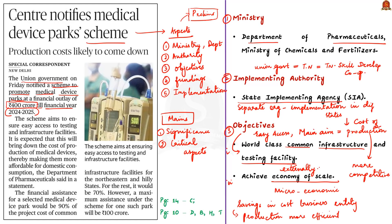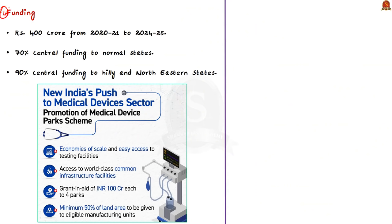Moving on to the funding aspect: the government has given a financial outlay of rupees 400 crore for the period from financial year 2020-21 to 2024-25. The center will provide up to 70 percent of the total cost of creating common infrastructure for states, whereas for northeastern and hilly states, the center will provide assistance of up to 90 percent. Note whether it is a central sector scheme or a centrally sponsored scheme for the preliminary exam.